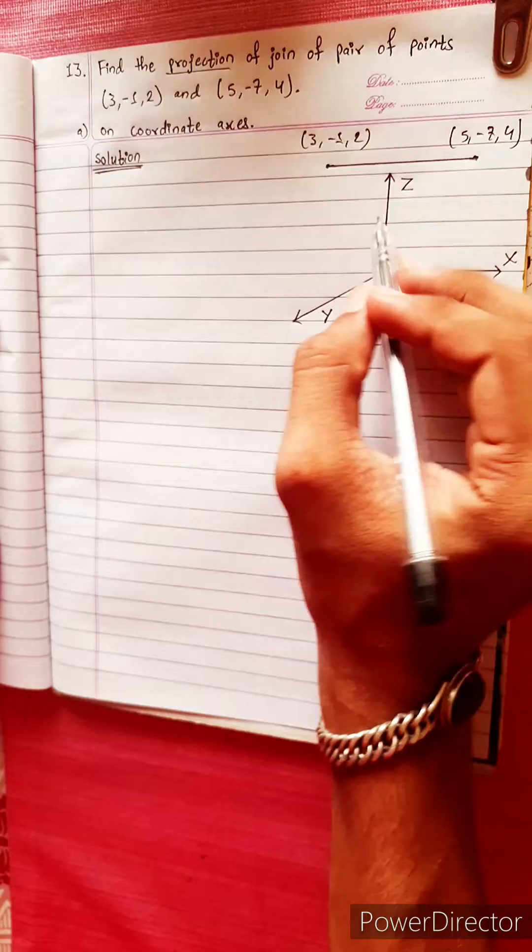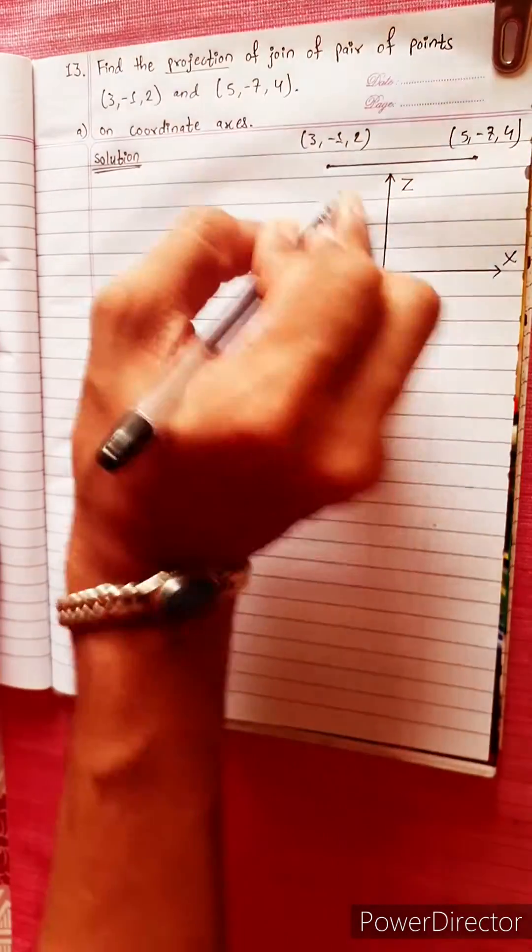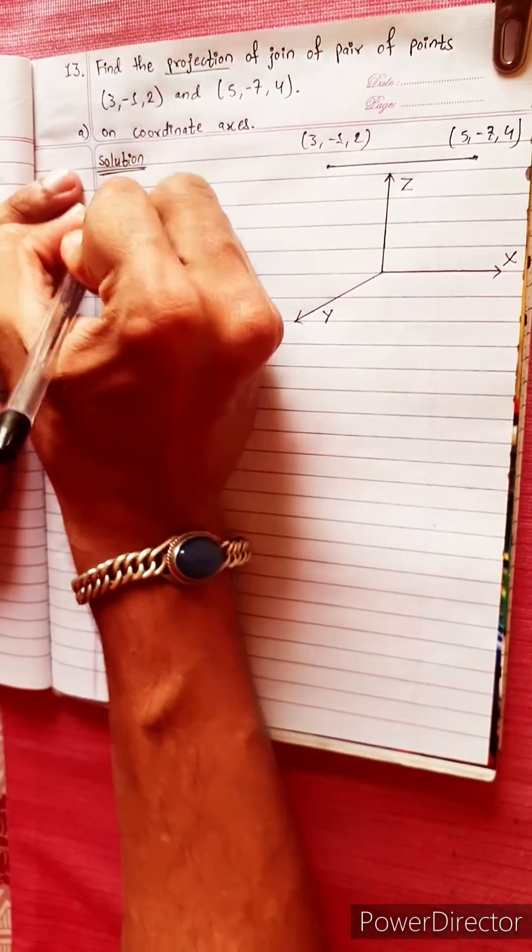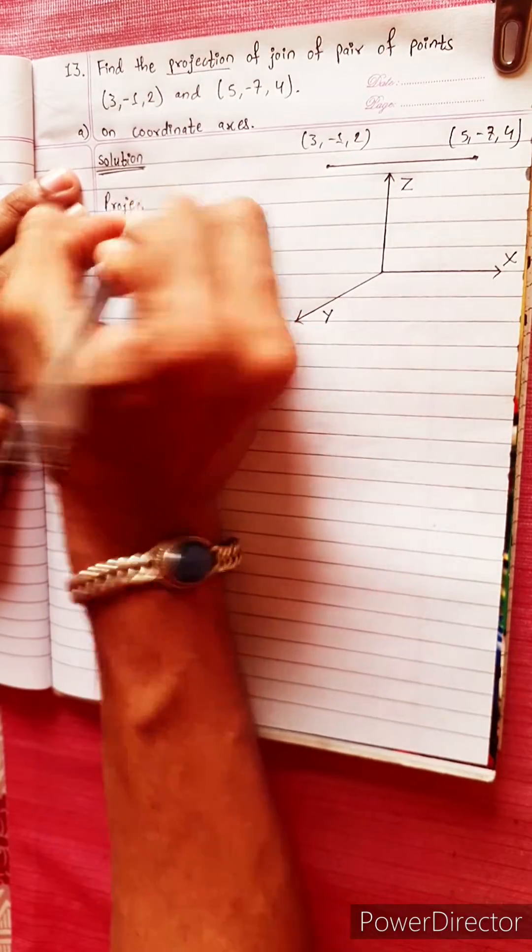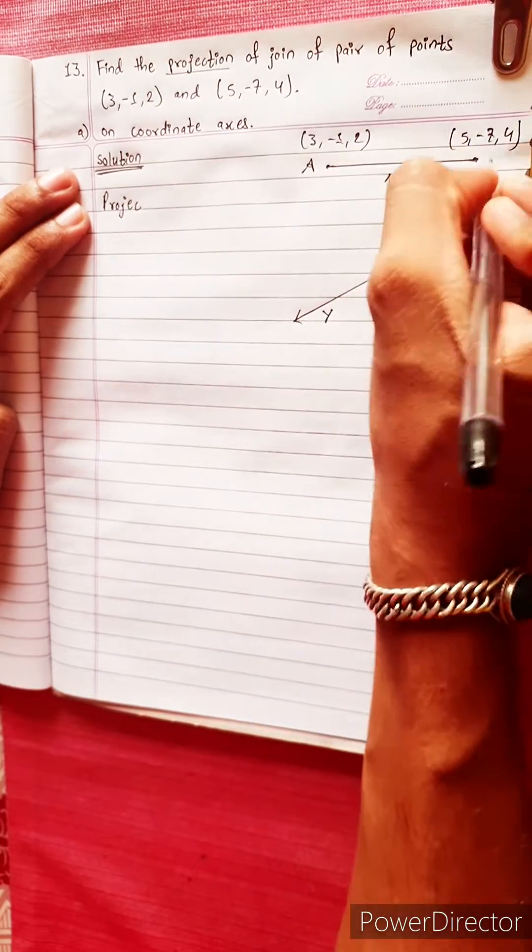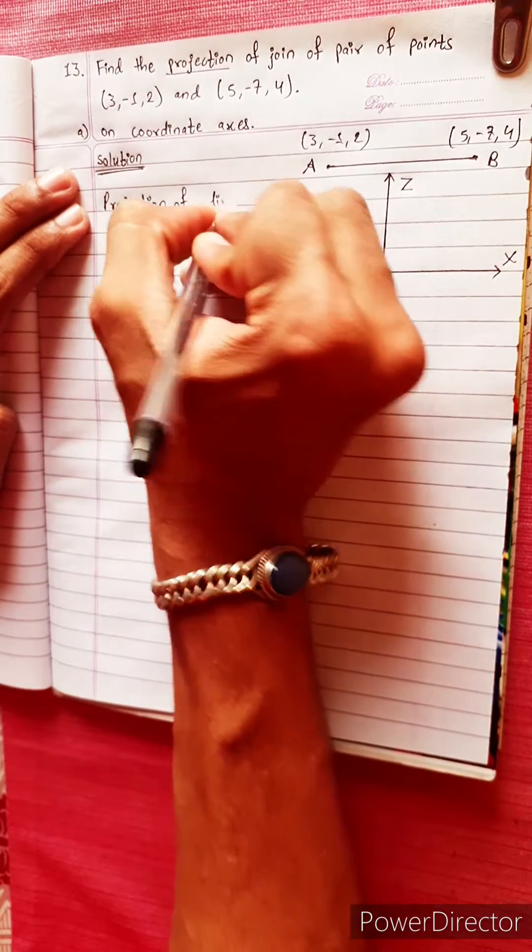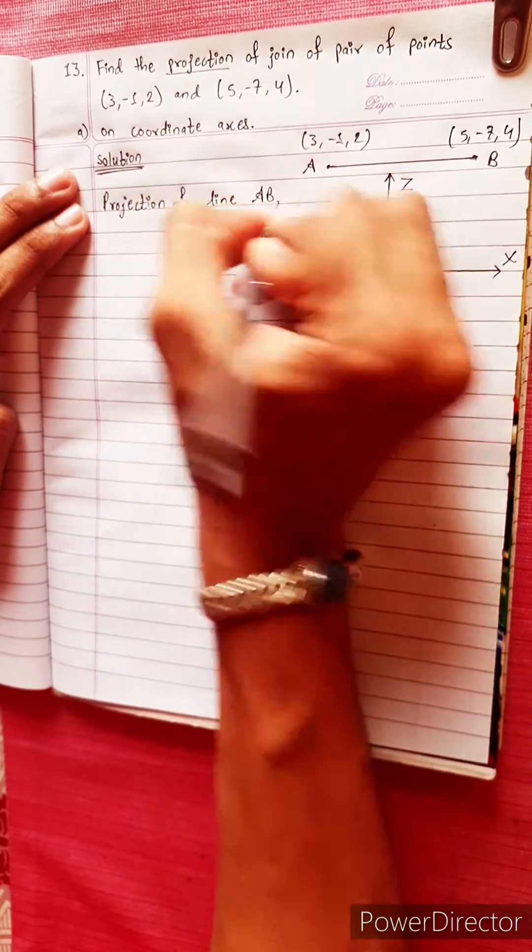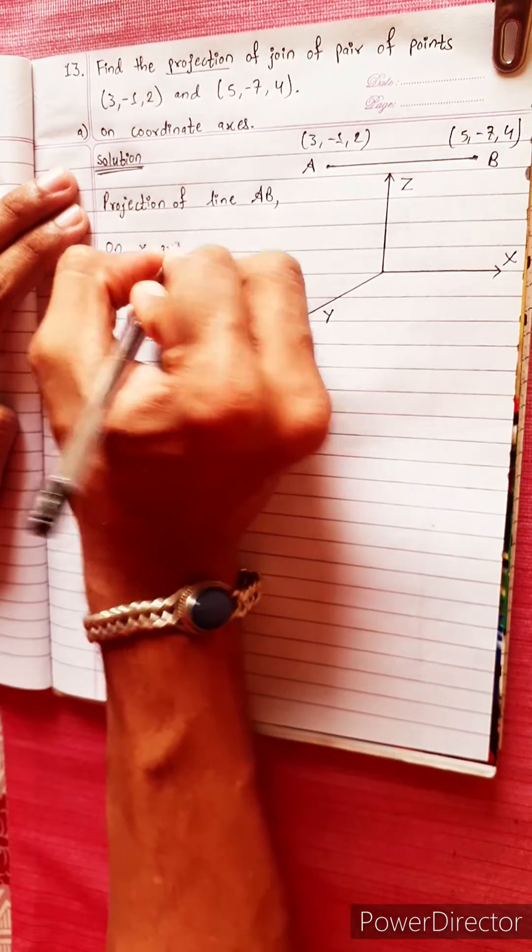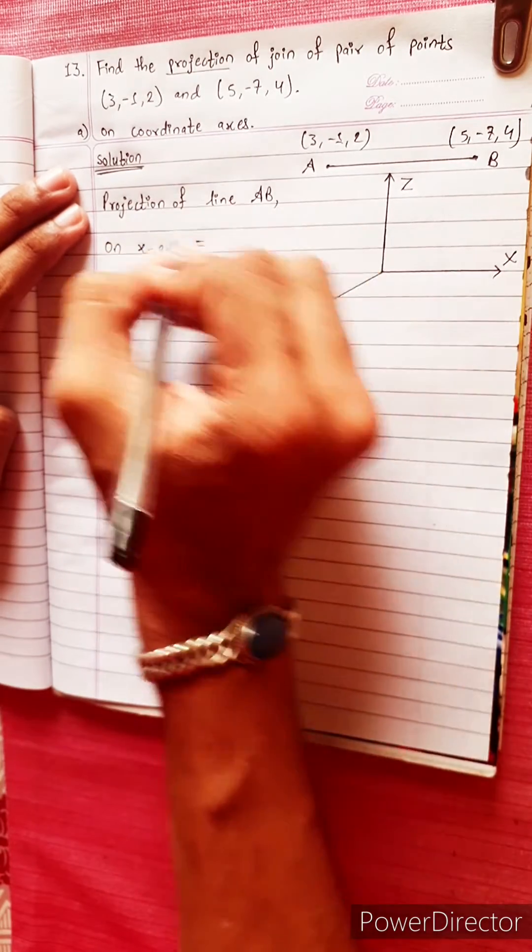This line is the same as possible. Now, the projection of the line. Projection of line AB on x-axis.